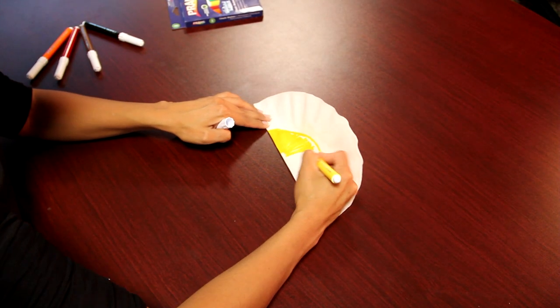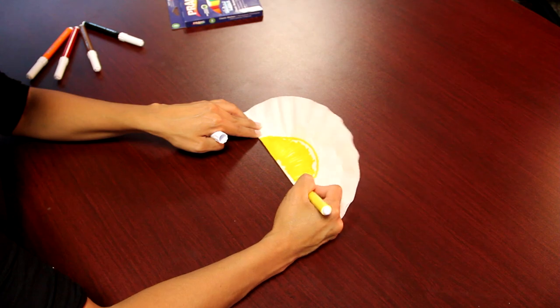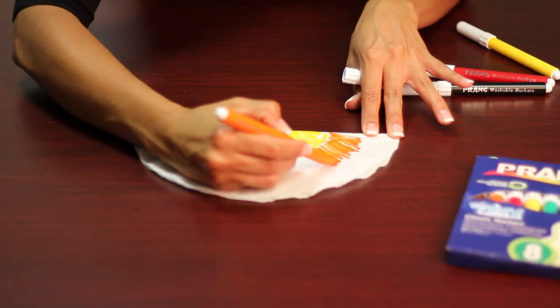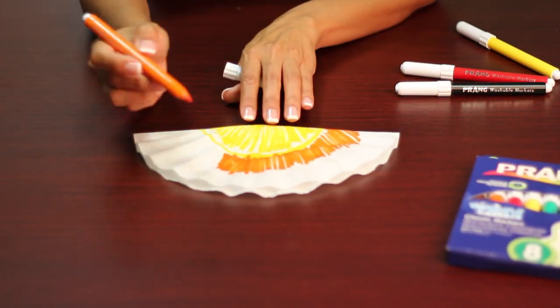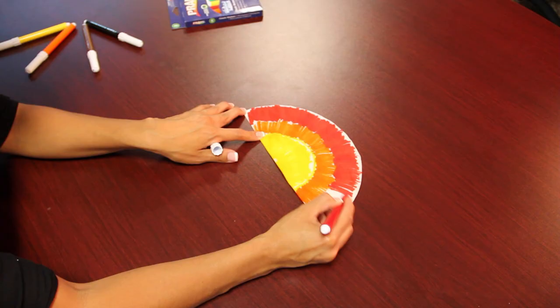First thing you want to do is get your coffee filter and start coloring it in. Now if you want to create broad lines, you can always use the side of your Prang washable markers to do this.